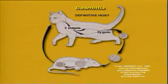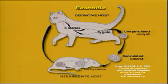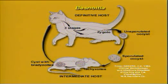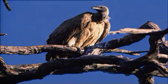The causative organism Besnoitia besnoiti is one of the tissue cyst forming coccidia. Cats have been shown to be definitive hosts of some other Besnoitia species, and workers in Kazakhstan have claimed this to be the case for Besnoitia besnoiti. Despite a substantial research effort in which domestic cats and a wide variety of wild carnivores such as lions, leopards and black-backed jackals and birds such as vultures were used, the life cycle of the African parasite has not been elucidated.